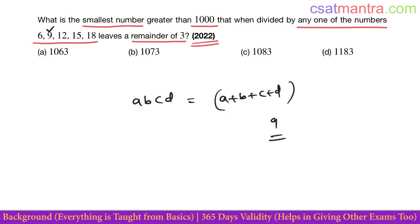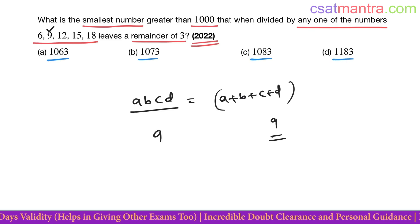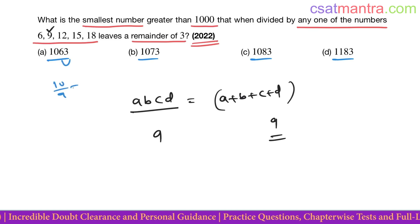that's the remainder when this number is divided by 9. The given options when divided by 9 should give remainder 3. See, 1 + 0 + 6 + 3, this is 6 + 3 = 9, no, 9 + 1 = 10. So 10 divided by 9, remainder is 1.